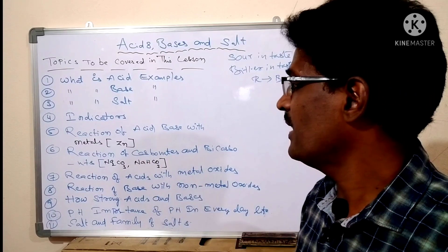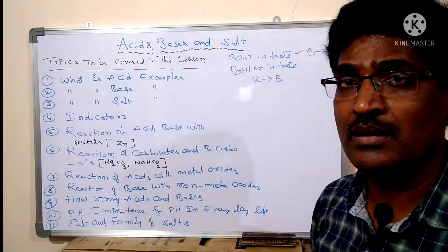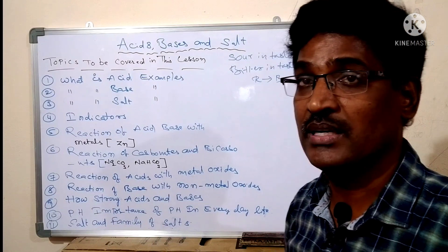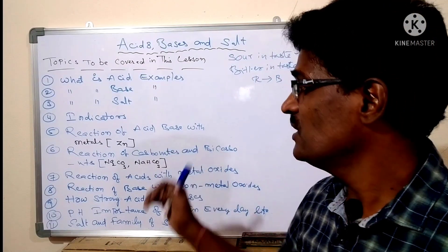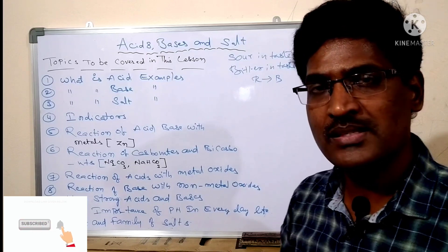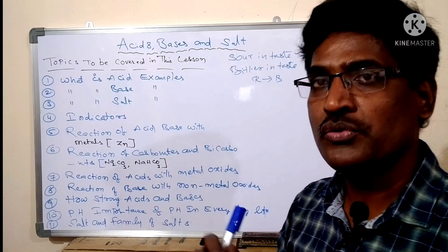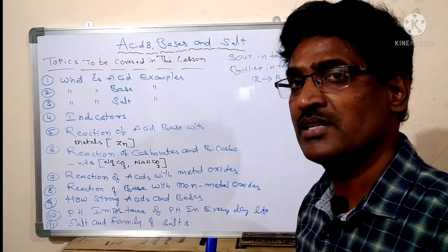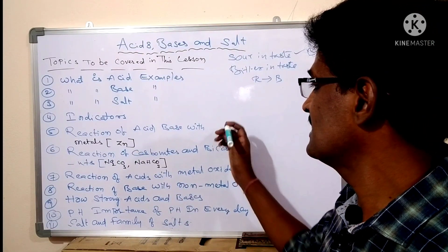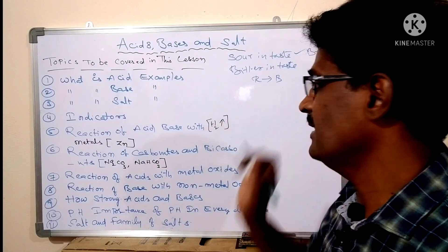Next topic: reactions of acids and bases with metals. If we take a metal — for example, zinc — when zinc reacts with acid, it releases H2 gas. Similarly, when zinc reacts with a base, it also gives rise to H2 gas. So in both situations, H2 gas is produced.